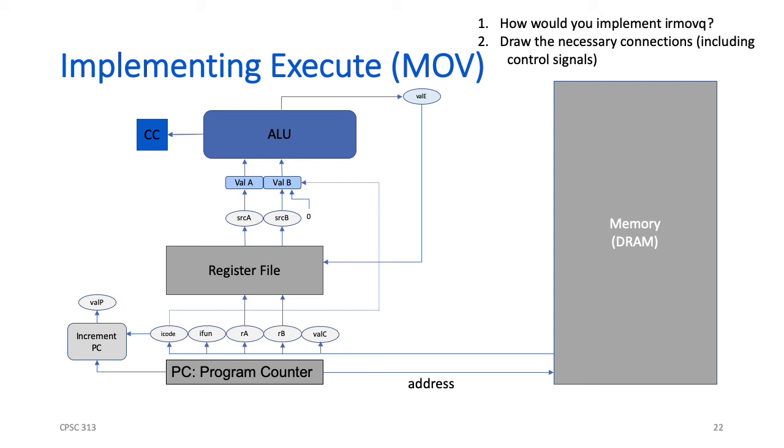Once again, I'm going to ask you to stop the video and think about how you would reuse all the machinery we've built so far to implement the move immediate into a register. Okay, let's figure out which mechanism that we've built we can reuse. We know that if we can feed an operation through the ALU, we can write it back to the register file. Further, we know that we can feed a 0 into val B. So all we need to do is take the value from the instruction, that is val C, and allow it to go through val A. Now we can take that immediate value, add 0 to it, pass it through the ALU, and write it back to the register file. The only additional piece we need is the control signal telling us which value to select for val A.